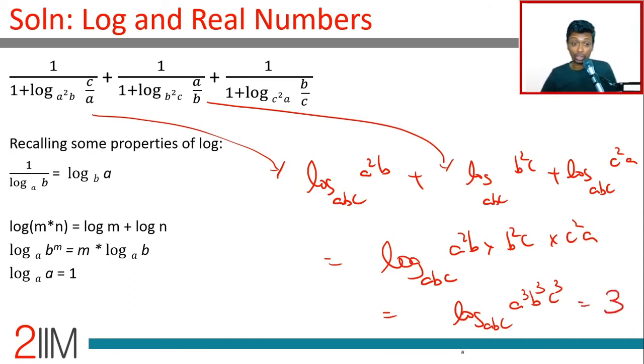The ideas we are using: 1/log b to the base a is log a to the base b. Log of m times n is log m plus log n. Log a to the base a is 1. Log b^m to the base a is m log b to the base a. These are the four properties of logarithm we are using to manipulate and simplify this.